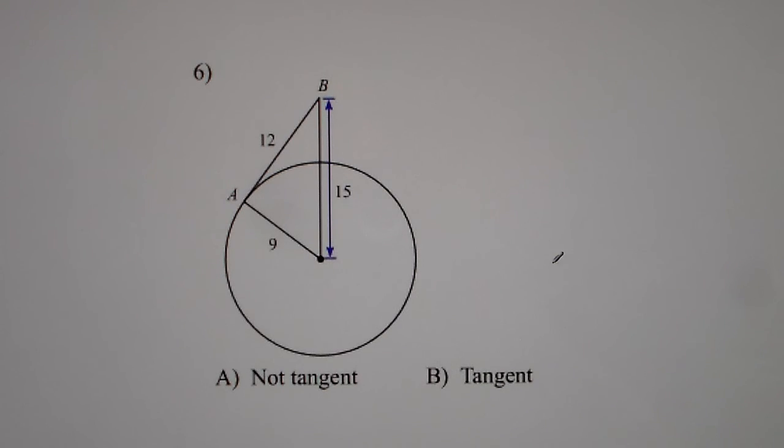Looking at number 6. Determine the right angle. It's always about the tangent line and the radius being connected. So that's where I find my right angle. I want it to be a right angle. So this is going to be our hypotenuse. So it'll be 9 squared plus 12 squared equals 15 squared.